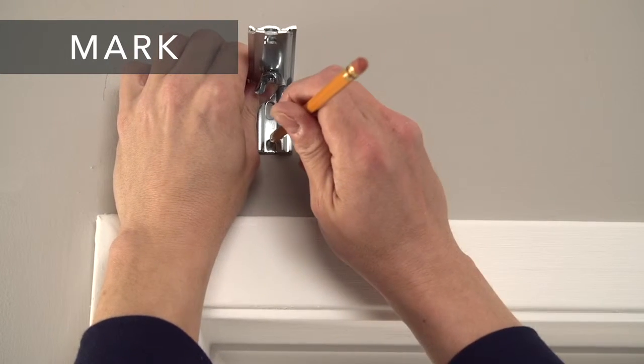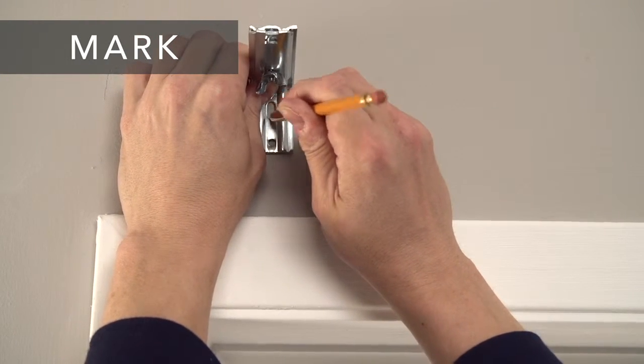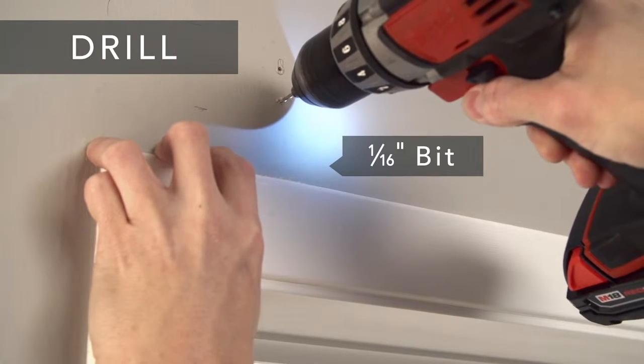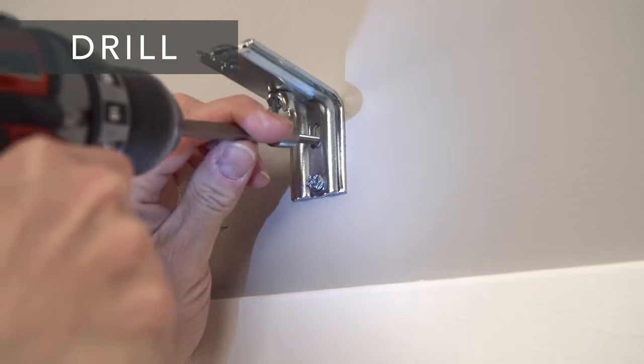Hold the brackets up to the marks and mark the screw locations. Drill the holes using a 1/16th inch bit and screw the headrail brackets into place.